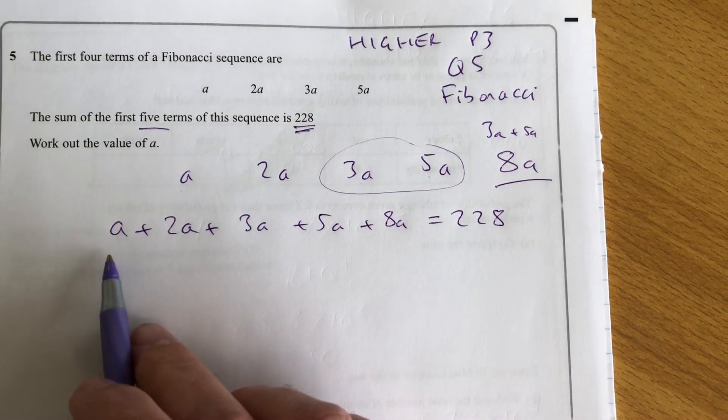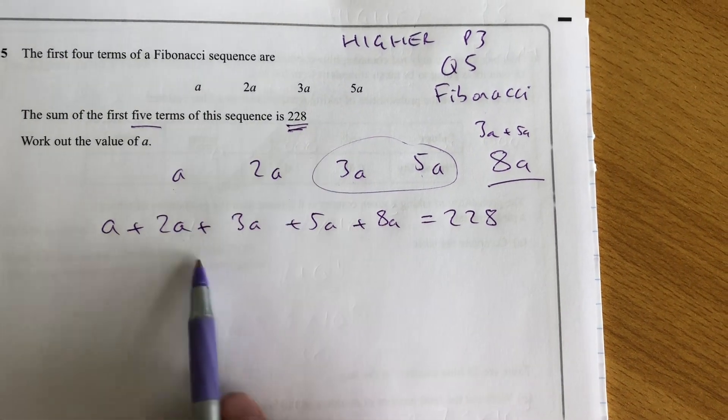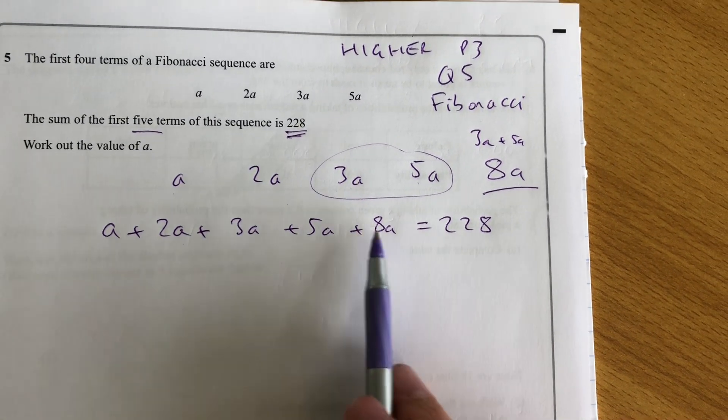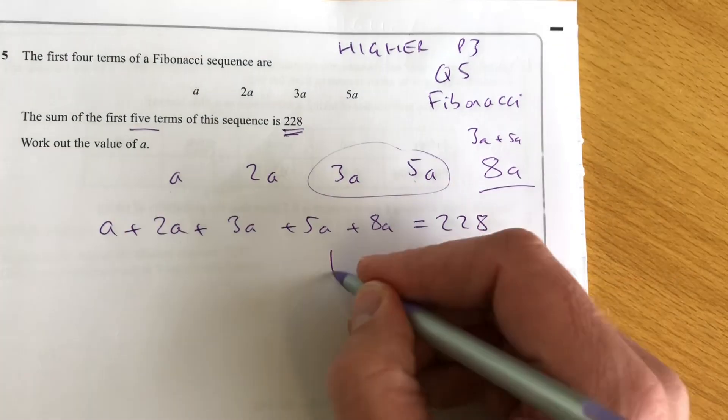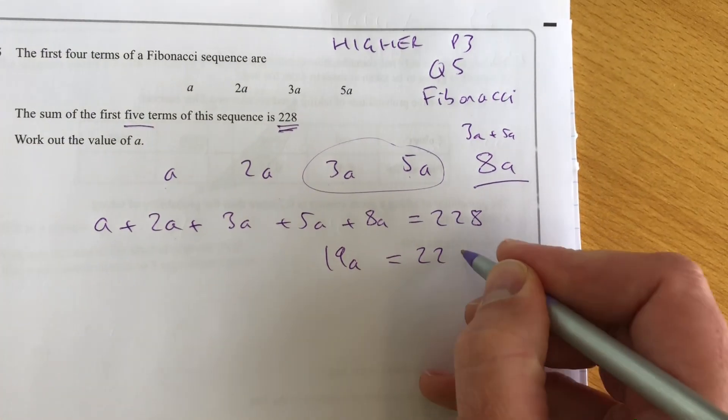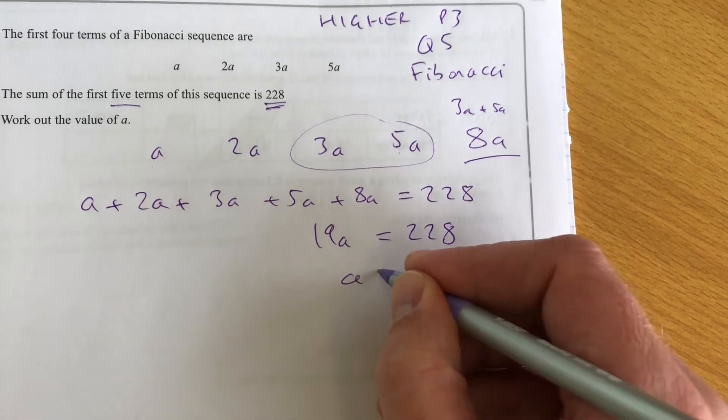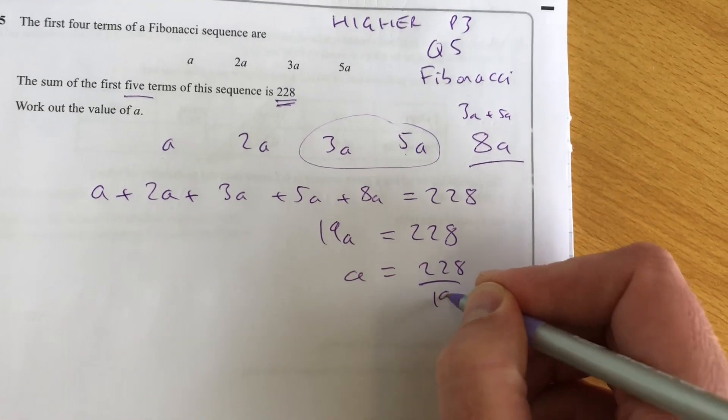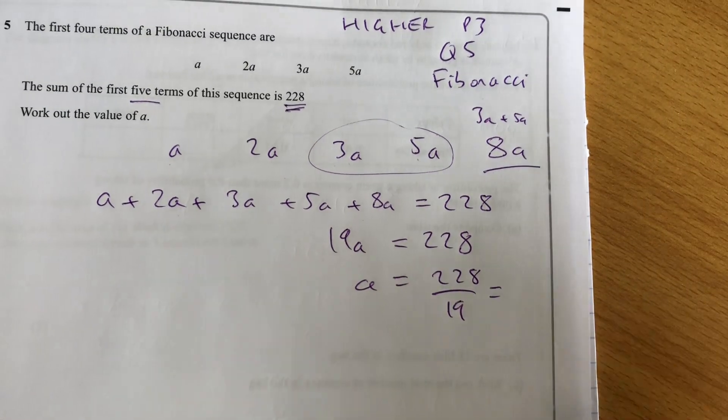Okay, so how many A's do we have here? We have 19A. So using the number bonds, there's 10, 15, 18, 19A. It is a calculated question, so I can do 228 divided by 19 and we get 12.